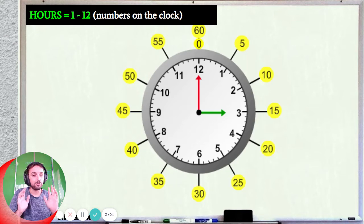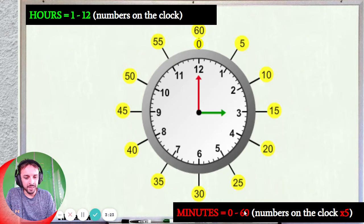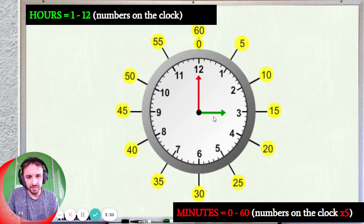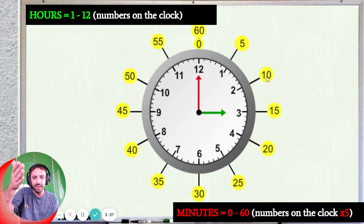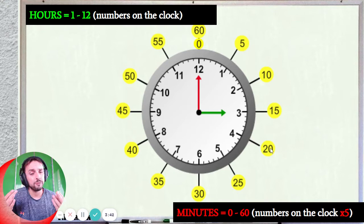Now the minutes — there are more minutes, it's not just 12. Because with the minutes, it's the numbers on the clock times 5. So there are 60 minutes in an hour, 60 minutes on the clock. Remember: 1 times 5 is 5, 2 times 5 is 10, 3 times 5 is 15, 4 times 5 is 20 — it's just your 5 times table to tell the minutes on the clock.